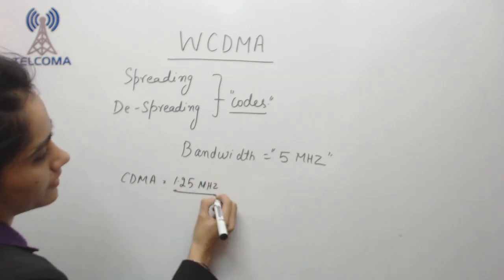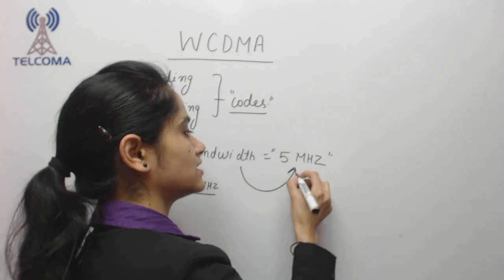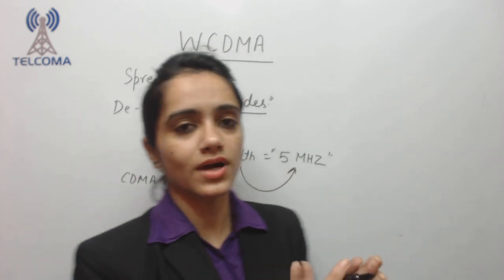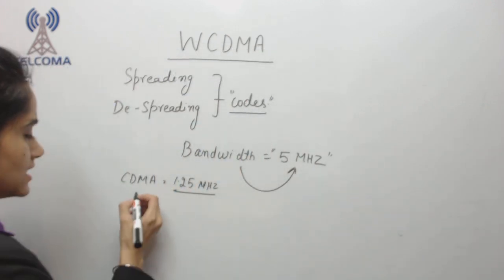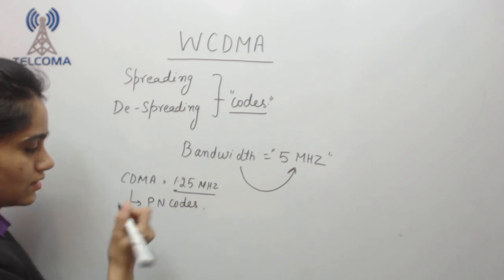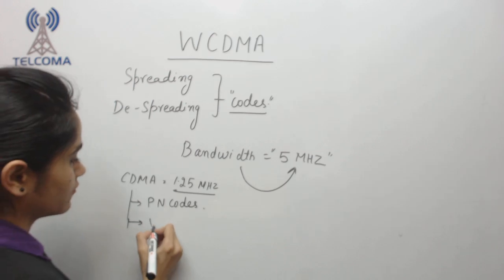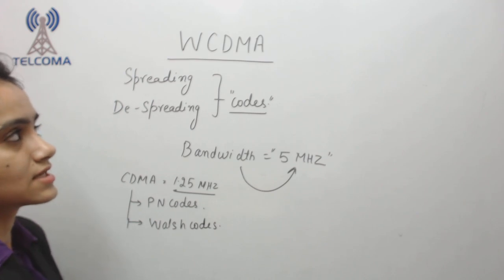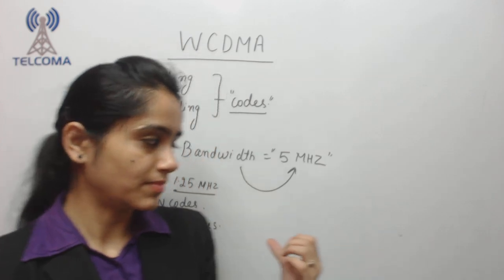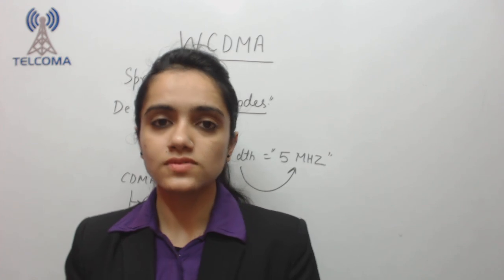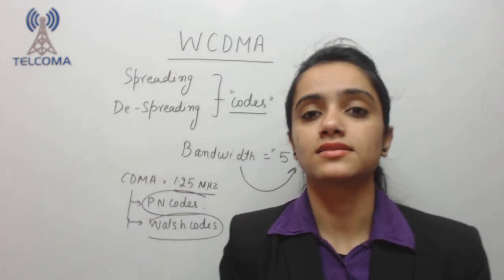We are increasing bandwidth because greater bandwidth supports higher data rates. In CDMA, the codes used are PN codes — pseudonoise codes — and Walsh codes. In WCDMA, the codes will be different from the PN codes and Walsh codes used in CDMA. We will continue discussing these codes in our next class. Thank you so much.